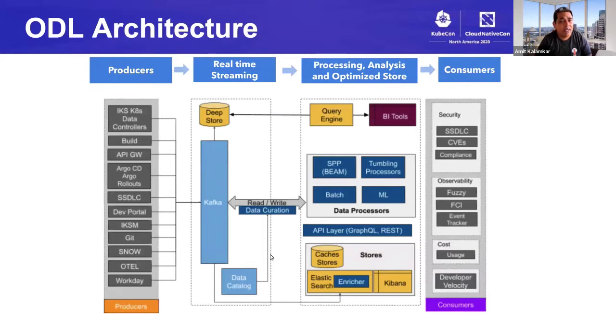Let's go over a high level of ODL architecture. On the left-hand side, you can see we have a set of producers. It includes our Kubernetes platform, build platform, API gateway. We get security data, audit data. All this data is collected in real-time through Kafka. We ensure that everything is cataloged so that the data is clean. Once that data is collected, we process it using Apache Beam for different use cases. All this data is stored in different caches as well as data structures to solve these use cases. We have a query engine and support different BI tools, like Tableau, ClickView, so that people can create reports. And on the right-hand side, you can see different consumers and use cases we support, including security, observability, cost optimization, etc.